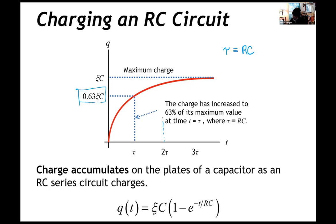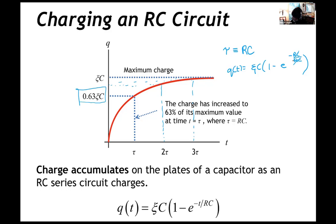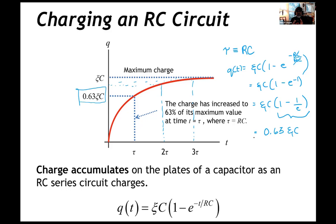At two time constants, that's a higher percentage of the maximum charge; at three time constants, even higher. Where does that 63% come from? It comes from substituting the time constant for T in the expression. We get RC over RC in the exponent, which cancels, giving charge equal to 1 minus e to the minus 1. That equals 1 minus 1 over e, which is about 0.63. So the time constant is a useful convention to measure how much of the capacitor is charged.